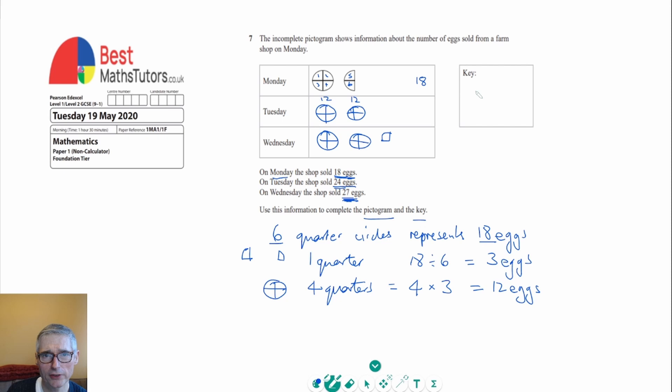And then finally we need to represent the key. And the key is just trying to show what does this represent. And that equals 12 eggs. So that's all we need to say for the key. We're just representing what one of these circles represents.